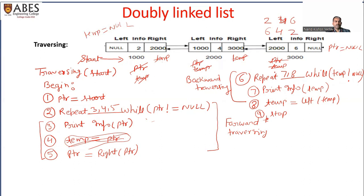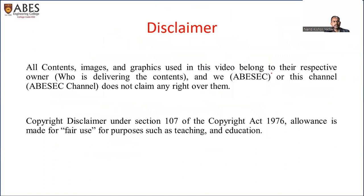So in this algorithm we are doing two things: using the ptr variable we go from the first node to the last node, and using the temp variable we move from the last node back to the first node. This is the complete algorithm for traversing a doubly linked list in both directions. Thank you all.